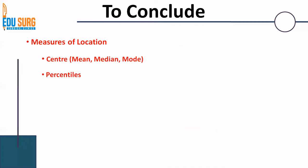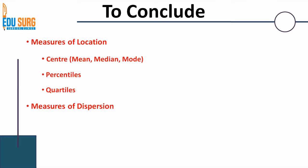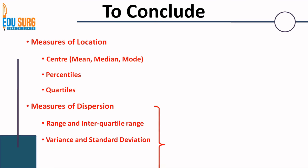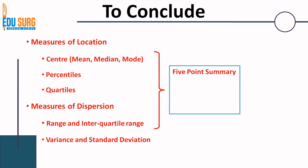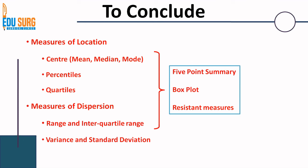Measures of location we have now seen completely — the center, percentiles and quartiles. We have seen measures of dispersion partially — range and interquartile range. We have seen what is the five-point summary, the box plot, and the resistance measures. We will have some different pattern of teaching for calculating statistics — real-time videos on that — because it is very important to understand how actually the calculations are made and why they are made. The calculative part of statistics we will see in live lectures, and some of the concepts again will be seen on presentations like this. Thank you.